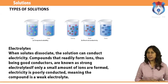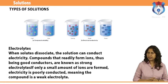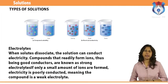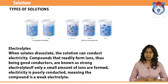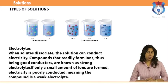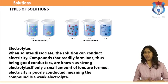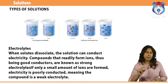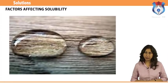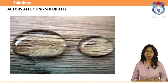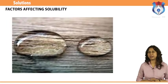Electrolytes: when solutes dissociate, the solution can conduct electricity. Compounds that readily form ions, thus being good conductors, are known as strong electrolytes. If only a small amount of ions are formed, electricity is poorly conducted, meaning the compound is a weak electrolyte. A strong electrolyte will dissolve completely — all ions dissociate. A weak electrolyte will partially dissociate but some ions will remain bonded together. Fat-soluble vitamins (A, D, E, K) are nonpolar and can be stored in fatty body tissues, while water-soluble vitamins (B and C) are polar, not stored, and must be consumed regularly.